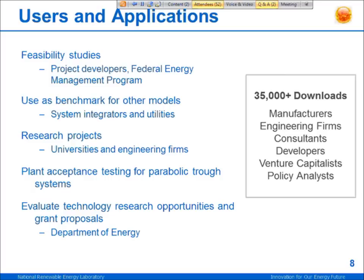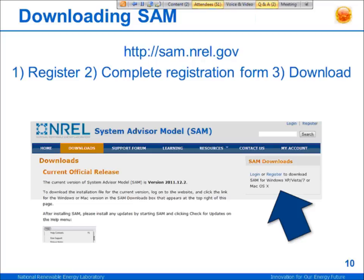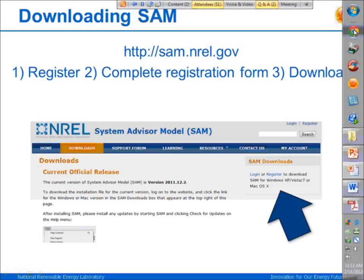SAM is free software. You can download it from the SAM website, which is sam.nrel.gov. To download it, you first have to register. Once you've registered, you can log in and download SAM. You can also get user support on the website through the SAM support forum. This is a searchable forum of questions that people have posted, and we monitor the support forum daily and post replies.